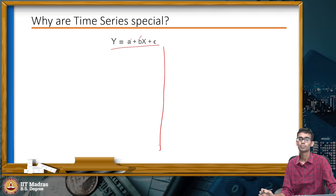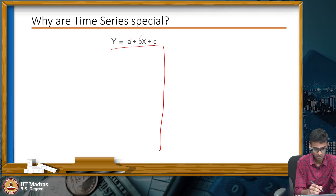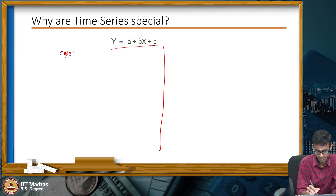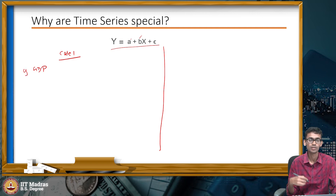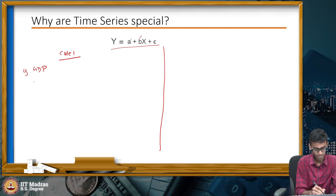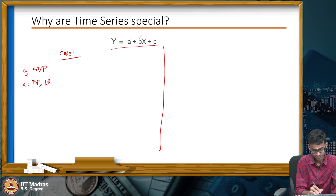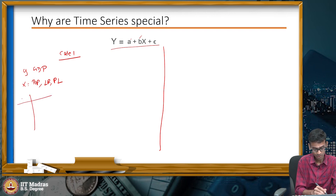Let's say you want to predict the GDP of a country. In this case, the GDP is your dependent variable, and you are trying to model it as a function of the population, the literacy rate, and the poverty level. You collect data for x and y and try to build a linear regression model.